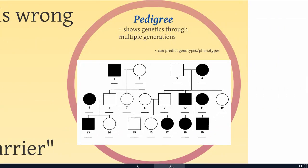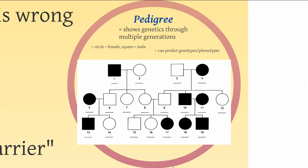A pedigree is going to show genetics through multiple generations — specifically it's going to show phenotypes and genotypes through multiple generations. When you're reading a pedigree, a circle is female and a square is male. If something is filled in, that means that individual has the recessive phenotype. We can go in detail and look at a pedigree and actually fill out information.